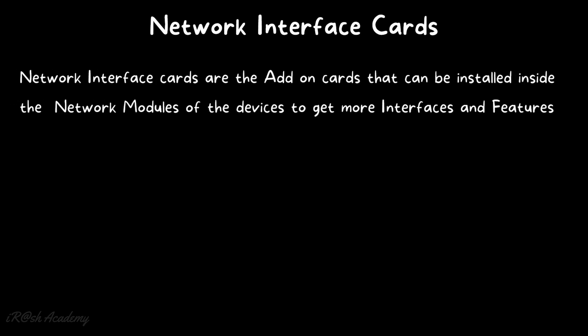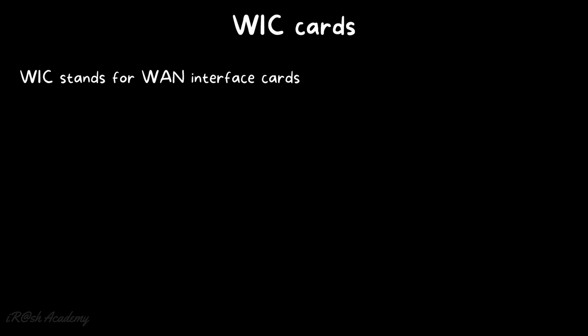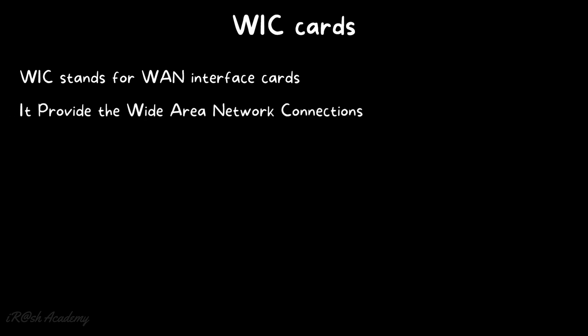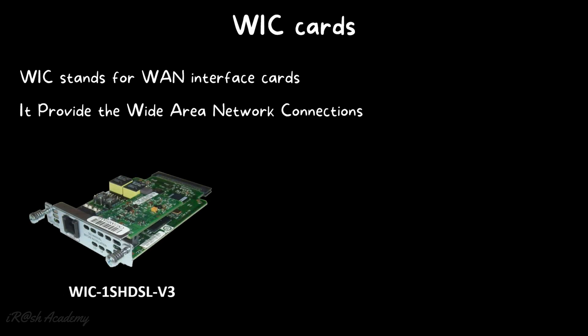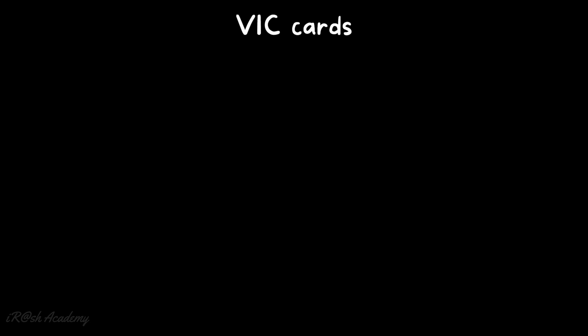Network interface cards are add-on cards that can be installed inside the network module of devices to get more interfaces and features. There are two major types: WICs — WAN Interface Cards — and VWICs — Voice Interface Cards. WIC stands for WAN Interface Card and provides wide area network connections. For example, one WIC card provides a DSL interface and another provides two serial interfaces.